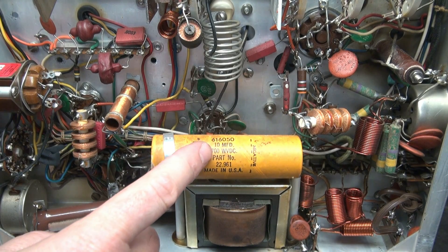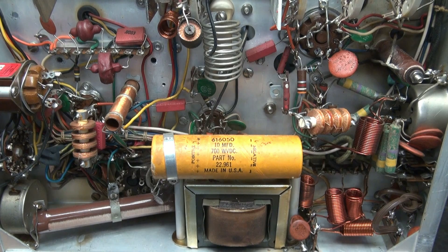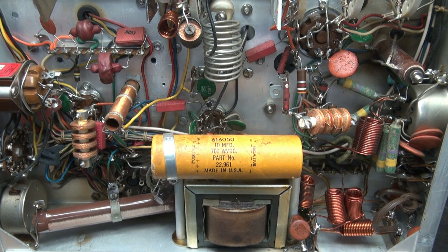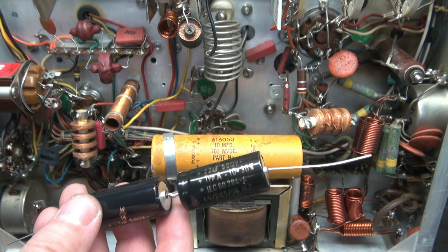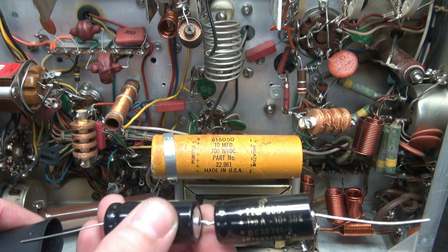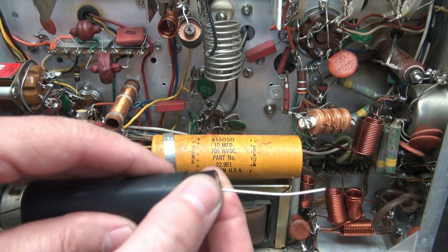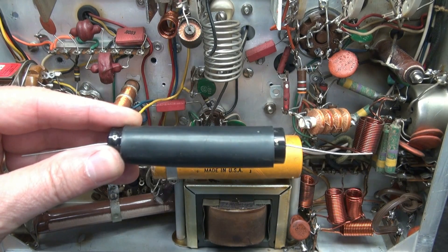So the original filter cap is a 10 microfarad at 700 volts. Good luck finding that cap. And if you do, you're going to pay a lot of money. I replace it with a pair of 22 microfarad 500 volt F and T caps with a piece of heat shrink over them. Drop right in there and does the job just fine.